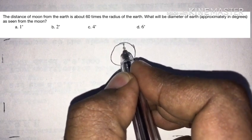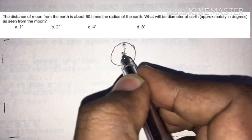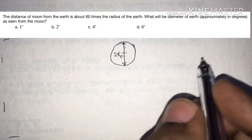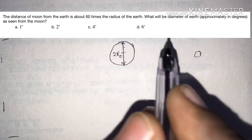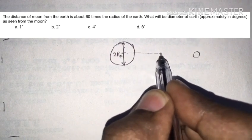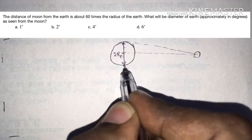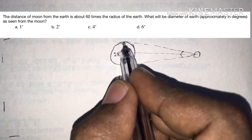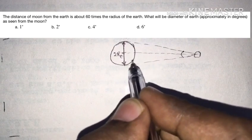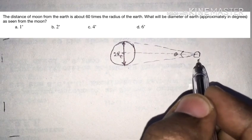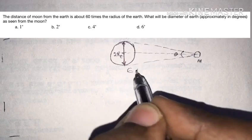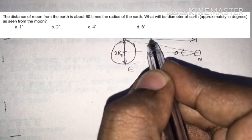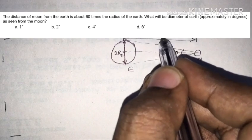If we say this is the earth, the diameter of the earth is two times the radius R_e. The moon is at a distance of 60 times R_e from the earth. We need to find the angle theta subtended by the diameter of the earth as seen from the moon.